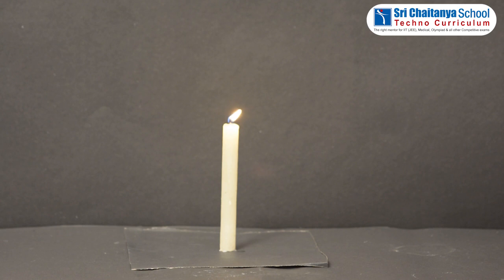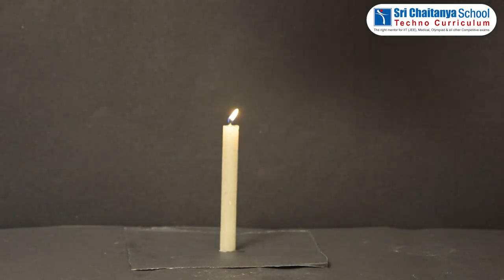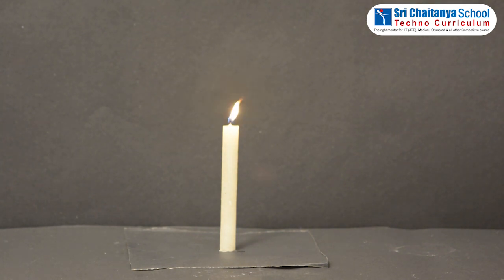So, let us observe by using a sheet of paper. Place the sheet of paper exactly opposite to the lighted candle. Children, now what can you observe? Can you see the candle? No. So, write down your observation in the tabular form.